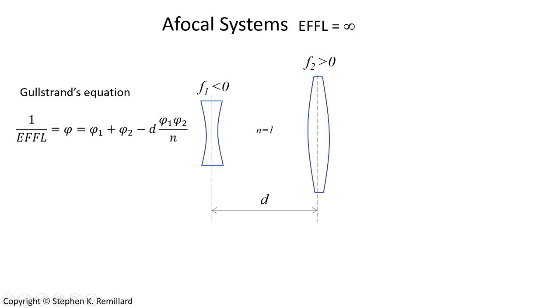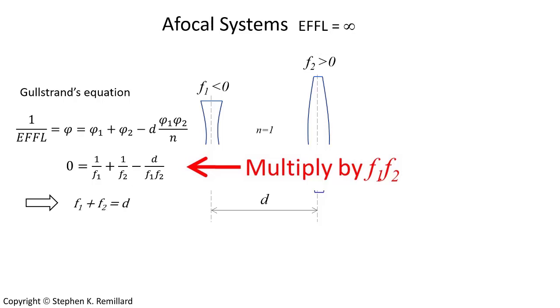Let's use thin lenses at first. V1 is the power of the first lens, and V2 is the power of the second lens. N is the refractive index between the two lenses. D is their separation. Replacing the phi's, the powers, with 1 over the focal lengths, gives a nice working equation for where you need to set D, given what F1 and F2 are. The sum of the focal lengths is D.